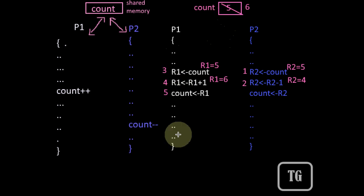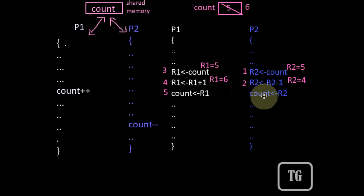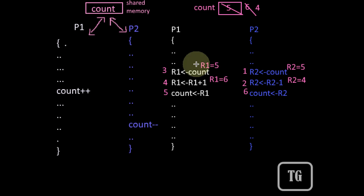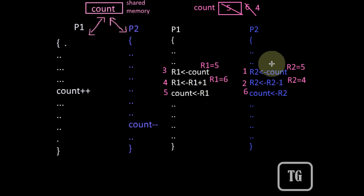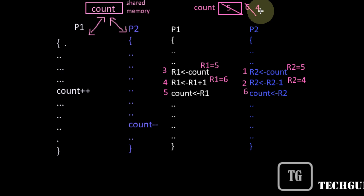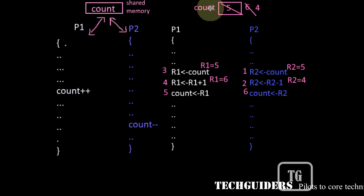R1 is incremented and P1 updates count with R1 = 6. P1 completes execution. Then P2 gets the processor again, resumes, and updates count with R2 = 4. The final value of count is 4. Again, this is not valid data — the value of count should be 5.